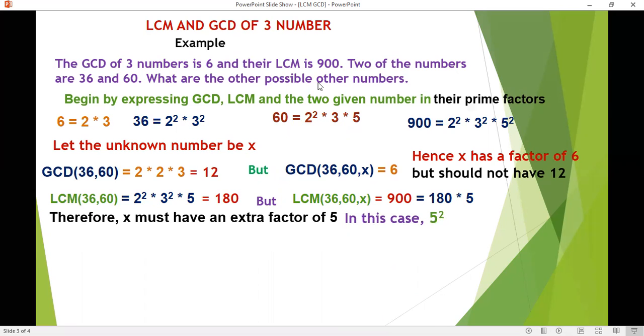So now, so far we know that the factors that we must have in x, x must have a 2 times 3 from the GCD of 6. Then from the LCM, our x must have a factor of 5 to power 2.